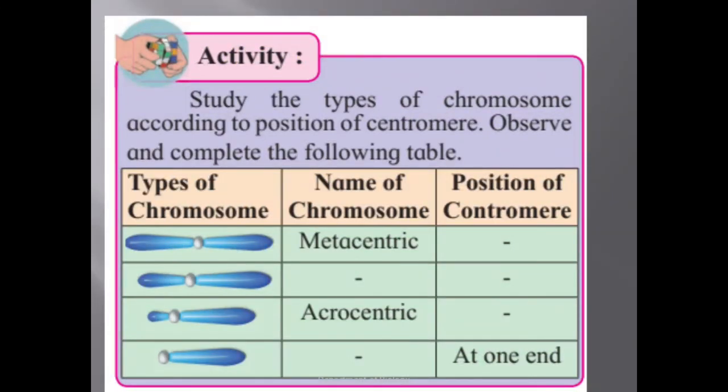This is the overall structure. You can see the different types of chromosomes in the chart. Metacentric has the centromere at the center, submetacentric has it slightly away from the center, acrocentric has it very far from the center, and in telocentric the centromere is at one end. That covers the different types of chromosomes.